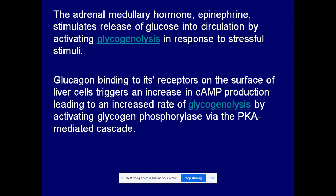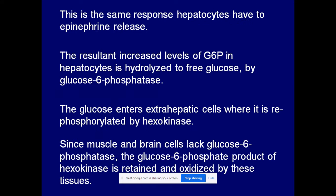Glucagon binds to its receptors on the surface of liver cells and triggers an increase in cyclic AMP production, leading to an increased rate of glycogenolysis. As a result, breakdown of glycogen takes place in the liver and releases free glucose into the blood circulation, so decreased blood glucose is restored to the normal glucose level. The result of these hyperglycemic hormones is increased levels of free glucose entering the circulation.